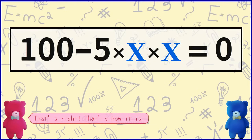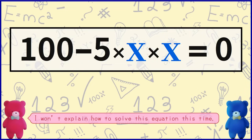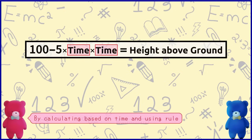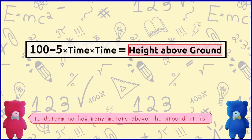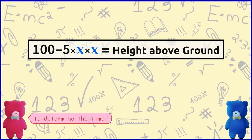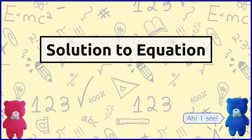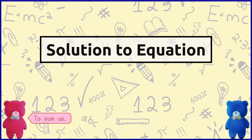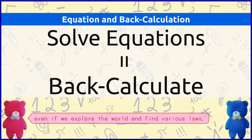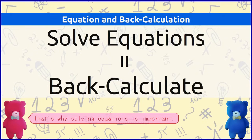That's right, that's how it is. The back-calculated original value is called the solution of the equation. To sum it up: if we can't back-calculate — in other words, if we can't solve equations — then even if we explore the world and find various laws, we can't fully utilize the laws we've found. That's why solving equations is important.